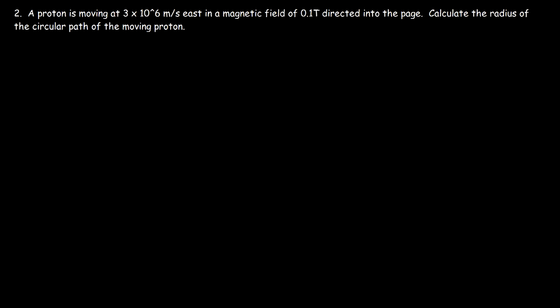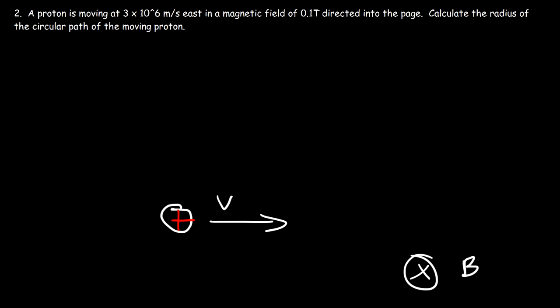Problem two: a proton is moving at 3×10⁶ meters per second east in a magnetic field of 0.1 Tesla directed into the page. Calculate the radius of the circular path of the moving proton. Let's draw a picture with the proton moving east — velocity in the positive X direction — and the magnetic field directed into the page.